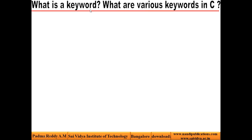Let us see what is a keyword and what are the various keywords available in C language. Before giving the definition of a keyword, let me ask some questions. Can you tell me what is this? This is letter T, this is N, this is I. If we treat this as one word, there is no meaning associated with this word. But if these letters are combined together like this, we get a word: int.